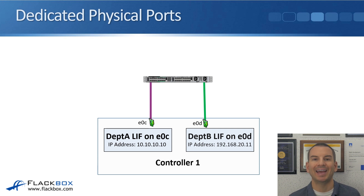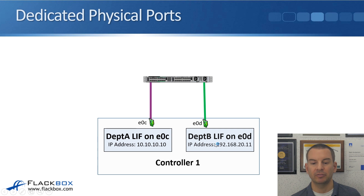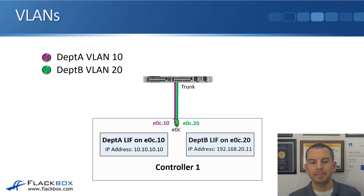Looking at using dedicated physical ports first — where we have separate physical ports for our different connection types. We've got a department A SVM and a department B SVM. We're using physical port E0C for department A. Department A has a logical interface with IP address 192.168.20.11 homed on port E0D. As long as each physical port has enough bandwidth to support the client, that would be the ideal configuration.